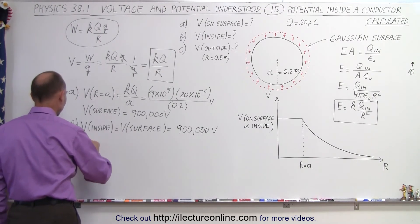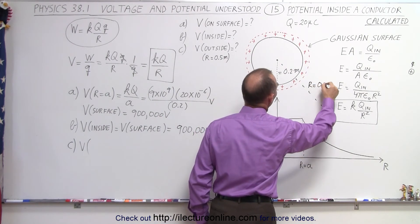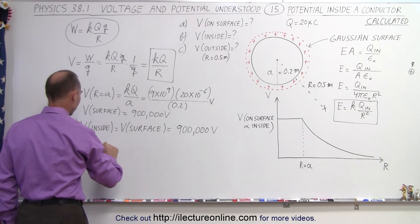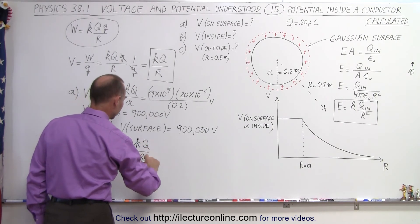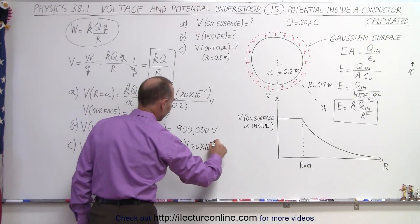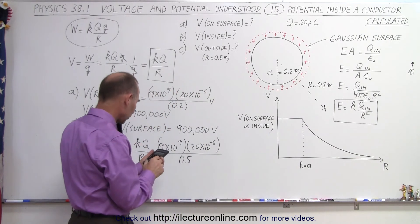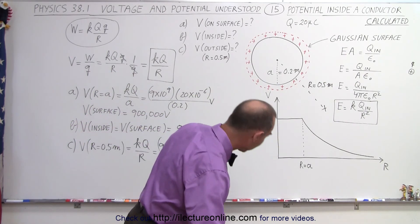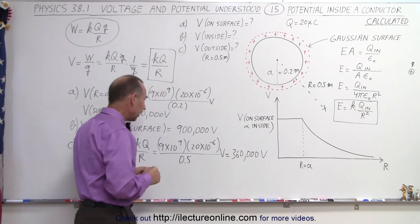For part C, we want to find the voltage at some distance away where r equals 0.5 meters. We take the same equation but change r to 0.5 meters, giving V = kQ/r = 9×10⁹ times 20 microcoulombs divided by 0.5. That works out to 900,000 times 0.2 divided by 0.5, which equals 360,000 volts.